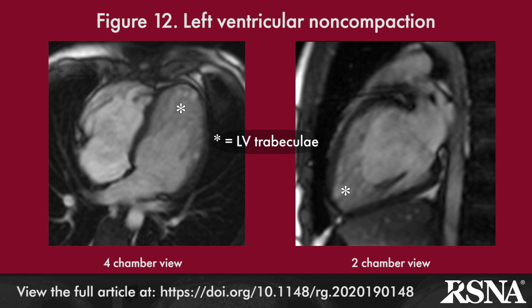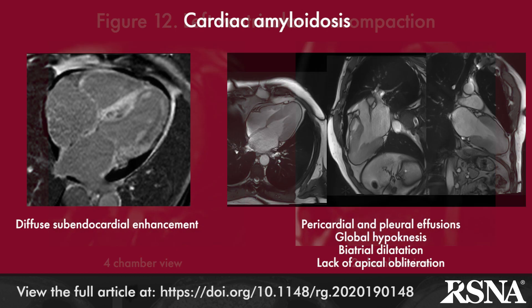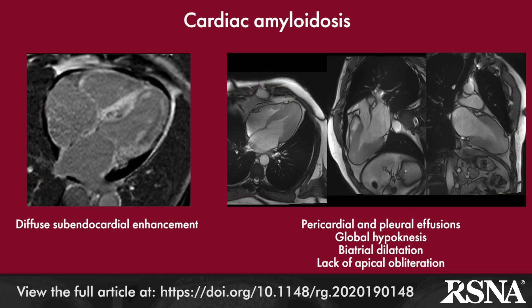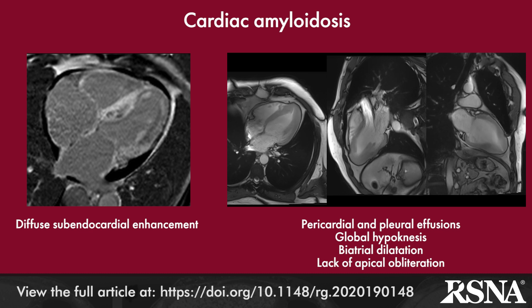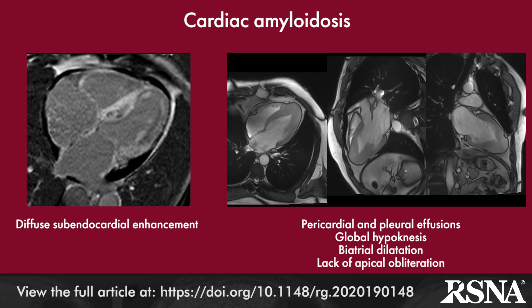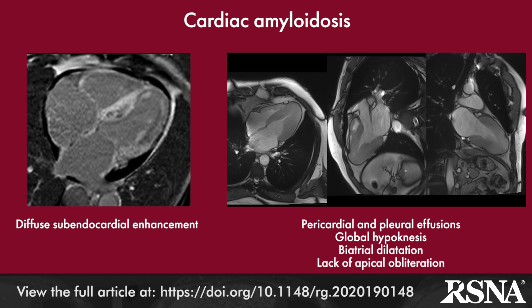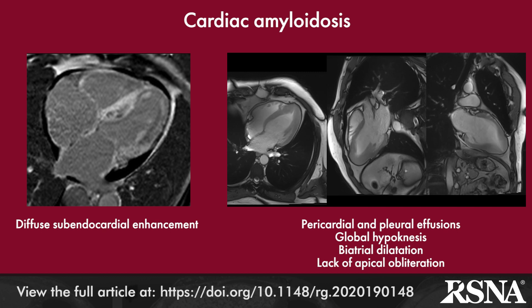Cardiac amyloidosis may manifest as diffuse hypertrophy and sub-endocardial enhancement associated with abnormal gadolinium kinetics, which leads to unusually dark blood at delayed enhancement cardiac MRI. Apical obliteration with fibro-thrombotic mass deposition, a hallmark feature of EMF, is not seen in cardiac amyloidosis.